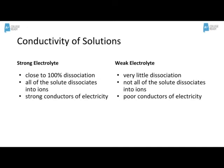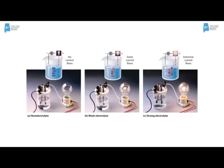A weak electrolyte has very little dissociation. Because not all of it dissociates into ions, we don't have a lot of charged particles, so it is going to be a very poor conductor of electricity. A non-electrolyte is not going to dissociate at all, so no current can flow and no electricity can be conducted.